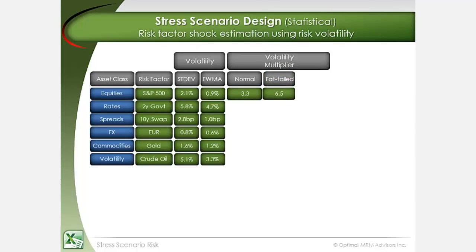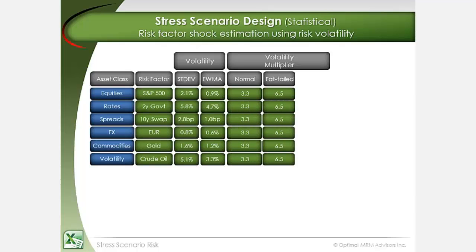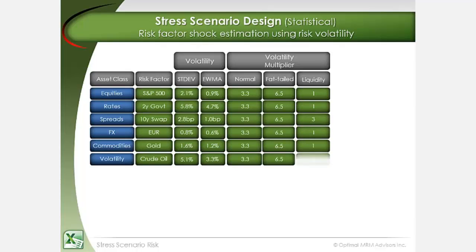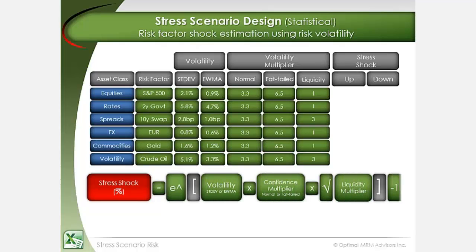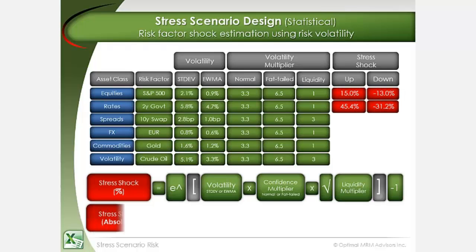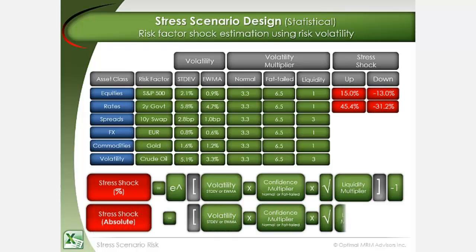A more precise approach is to analyze kurtosis historically in order to estimate an appropriate multiplier for each risk factor. The liquidity factor is further applied as a function of the extent to which associated market positions would be difficult to unwind or exit in a stressed market environment. The percentage stress shock is then calculated as a function of the one-day volatility times an appropriate confidence multiplier, such as 6.5, multiplied by the square root of the liquidity multiplier.